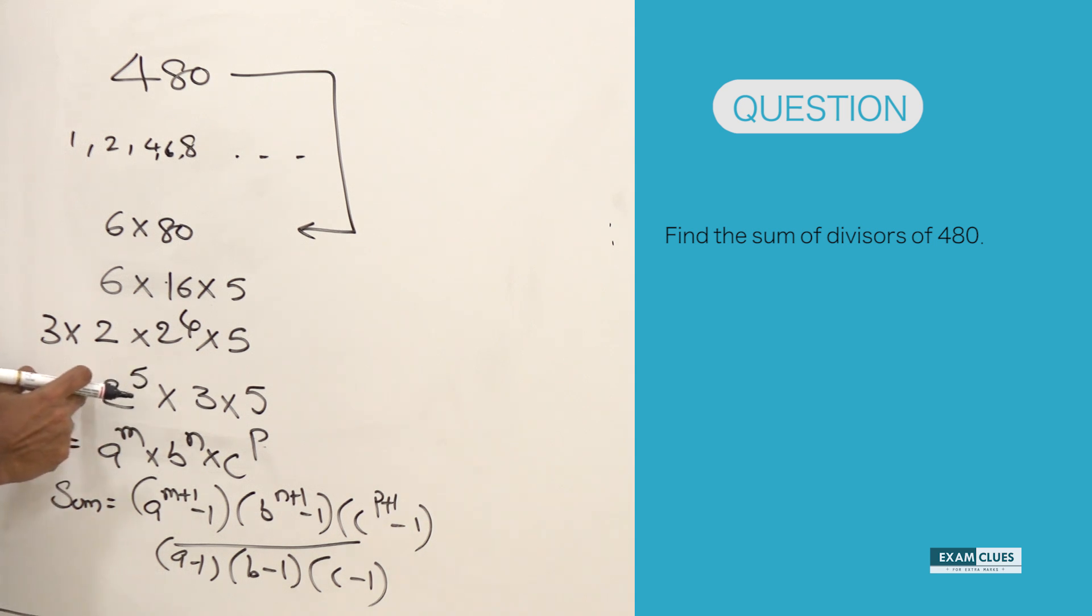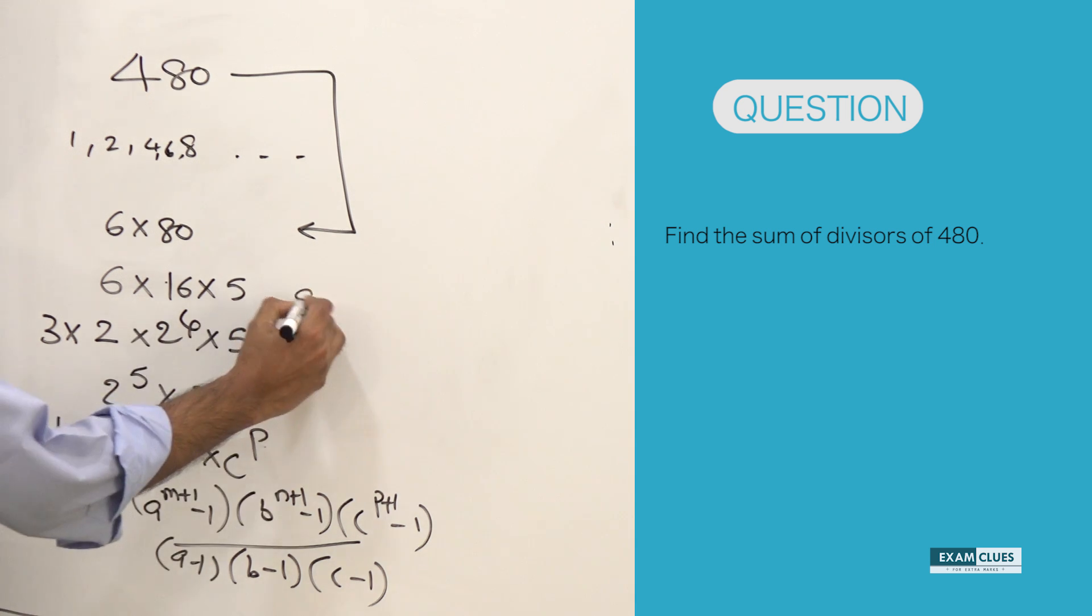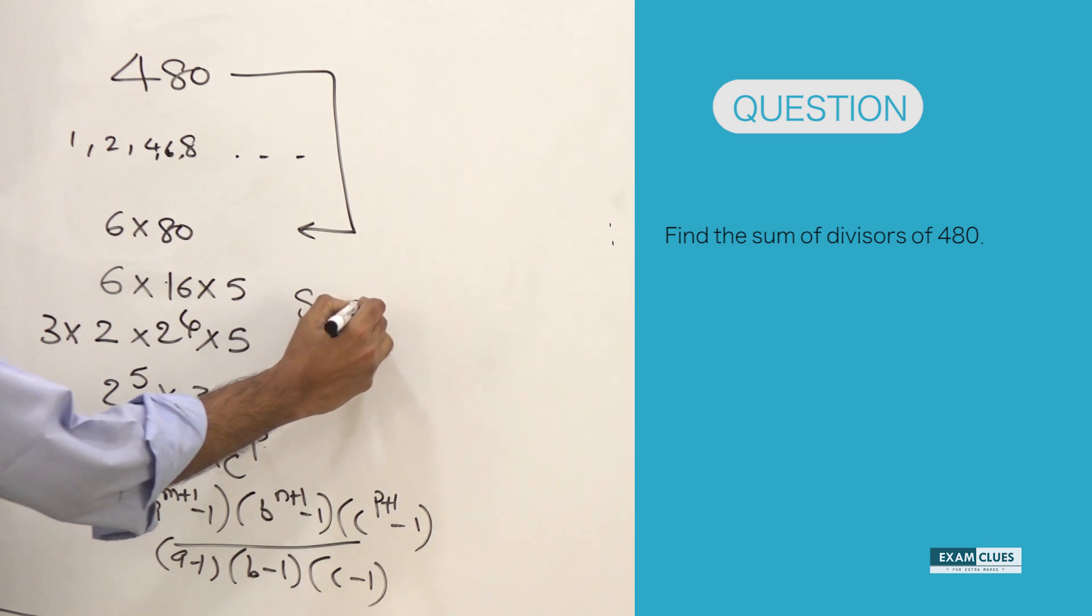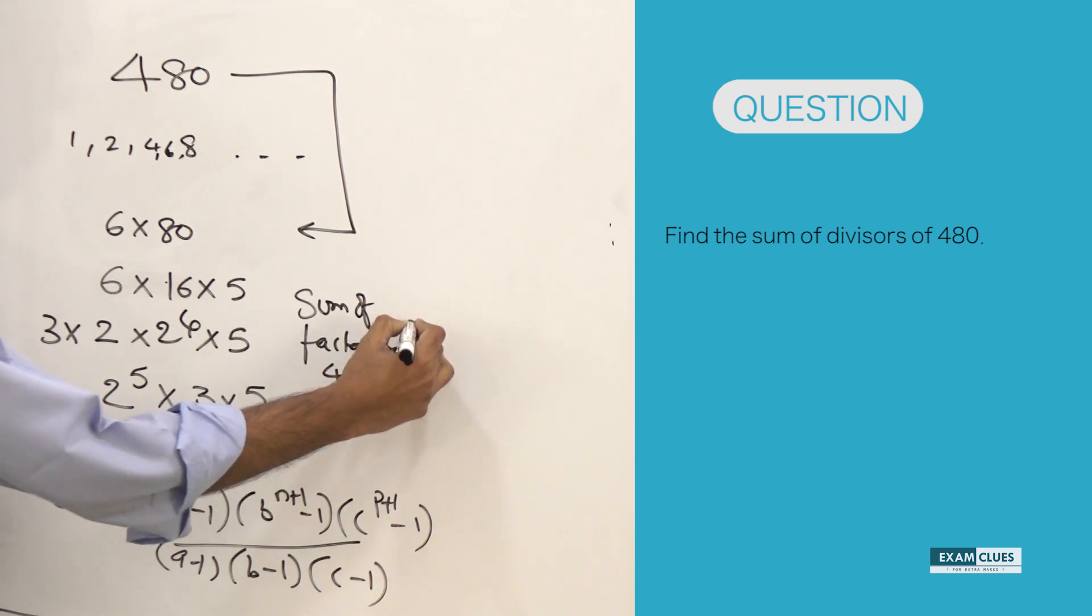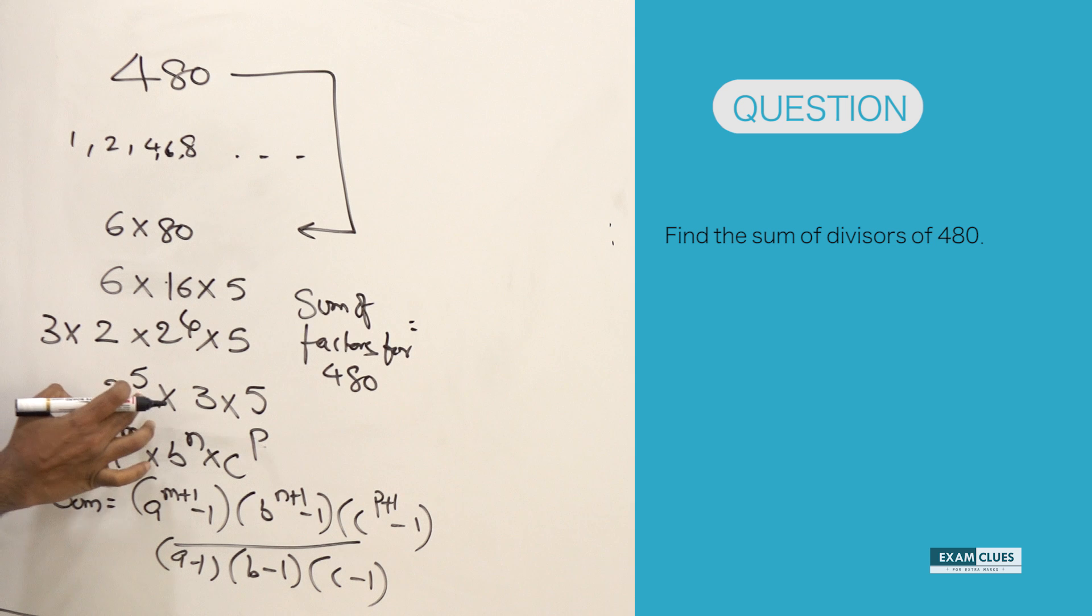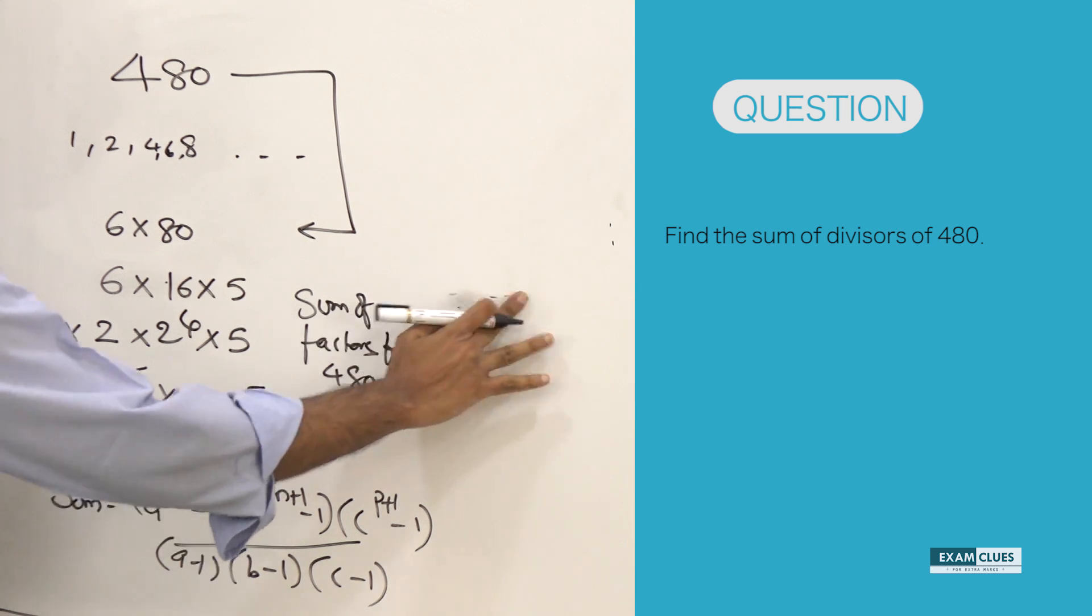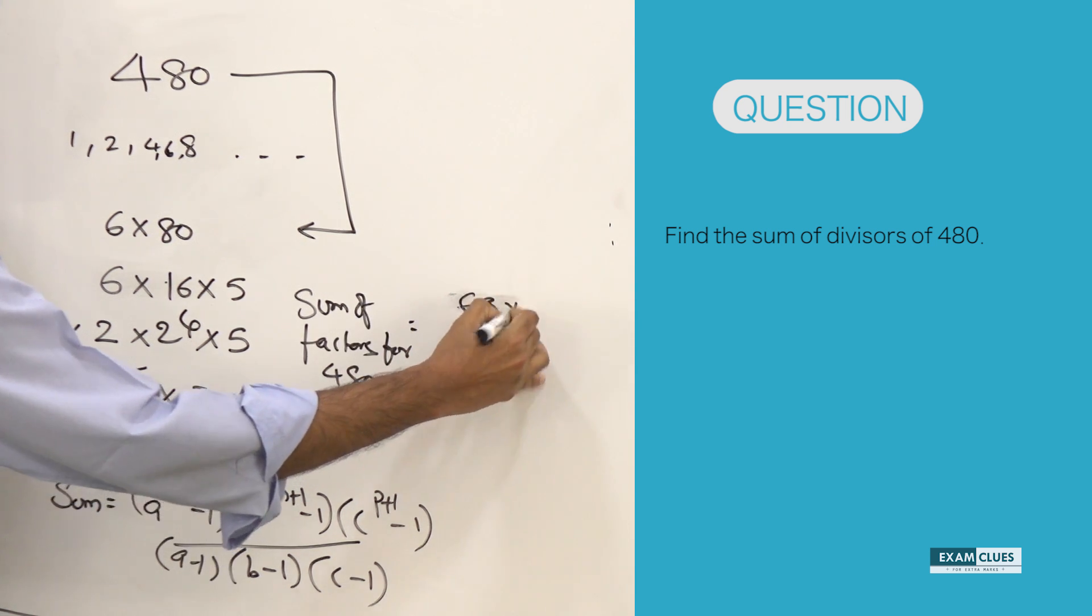You already know that this is 2 power 5, 3 power 1, 5 power 1. So sum of factors for 480 is going to be 2 power 5 plus 1 minus 1, that is 2 power 6 minus 1, which is nothing but 64 minus 1, that is 63.